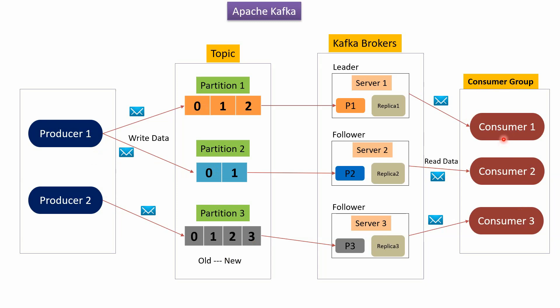Consumer 1 subscribes to the topic and reads data from partition 1. Consumer 2 subscribes to the topic and reads data from partition 2. Consumer 3 subscribes to the topic and reads data from partition 3.